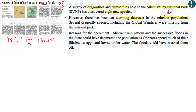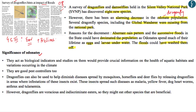Odonate usually means a dragonfly or a damselfly. A very important species, namely the Global Wonder, was missing from the national park. The reason for the decrease in population has been attributed to floods — the aberrant rainfall in Kerala and the successive floods can be a possible reason for the decrease in their population, because odonates spend much of their lifetime as eggs and larvae underwater and there is a high possibility that floods washed them off. Odonates carry a lot of ecological value: firstly they act as biological indicators, and studying odonates can give information on the health of aquatic habitats and variations in climate, as they are very sensitive to climate change.